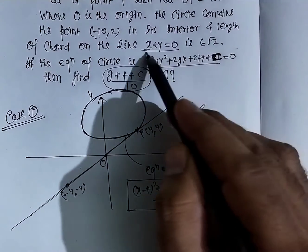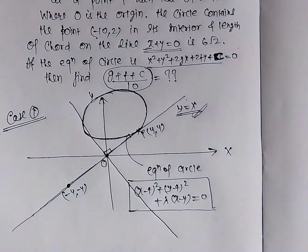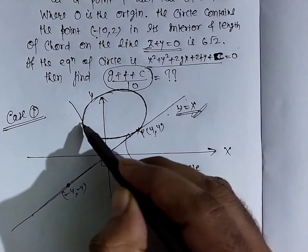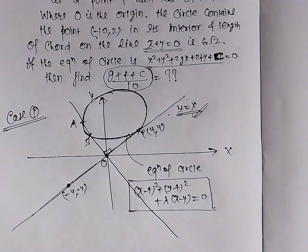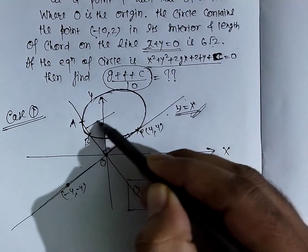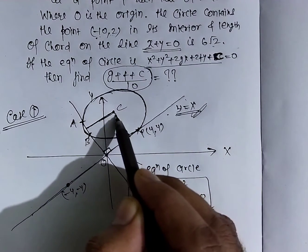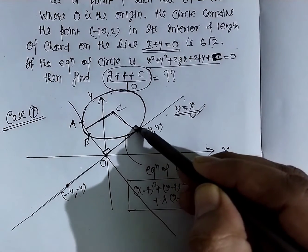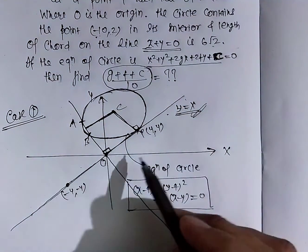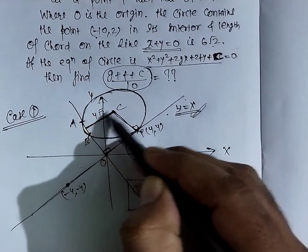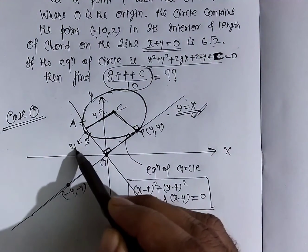Line x + y = 0 का slope -1 है और y = x का slope 1 है, तो ये दोनों perpendicular हैं। Center से इस chord पर perpendicular bisector डालेंगे। Chord AB की length 6√2 है, तो half chord = 3√2। और OP = 4√2 है, तो center से line y = x की distance भी 4√2 होगी।